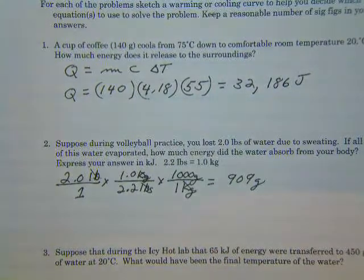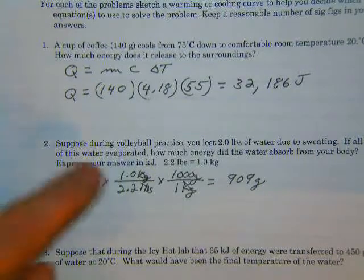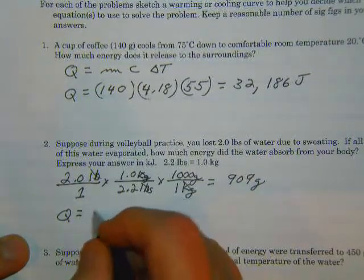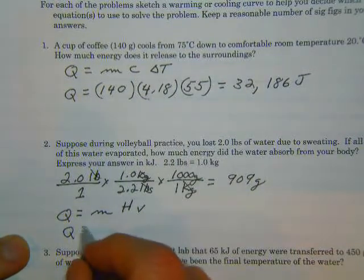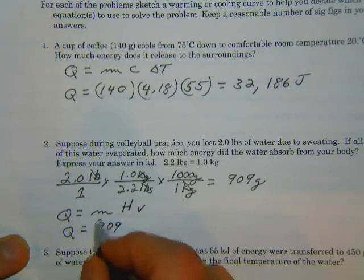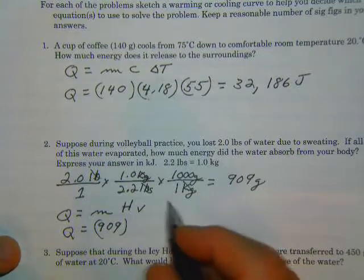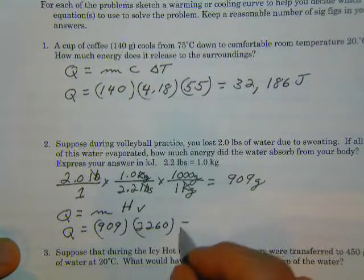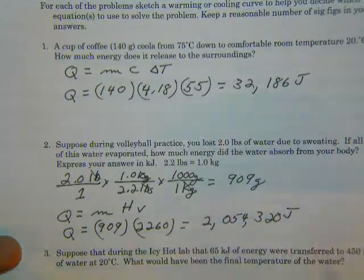From there, we're looking at a phase change because we're looking at liquid water going to the gas phase since it evaporated. So we're going to use the formula Q equals M times H, using the heat of vaporization. Q equals 909 grams, and the heat of vaporization for water is 2,260 joules per gram. With straight multiplication, we get 2,054,320 joules.